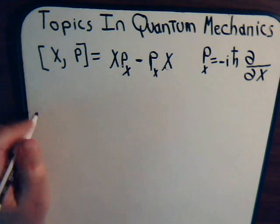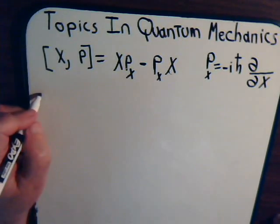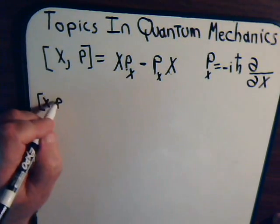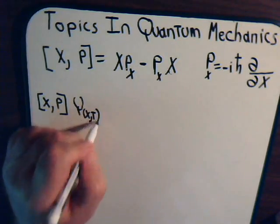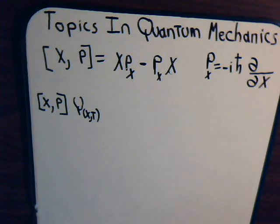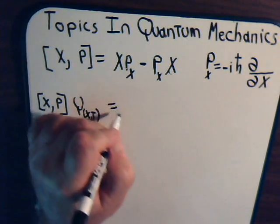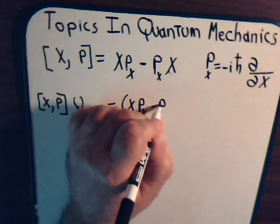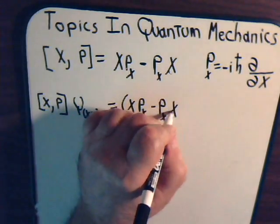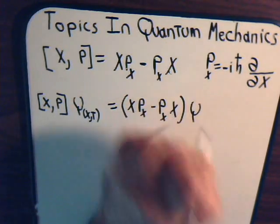Suppose that here is our commutator, [x, p], and here is some function psi, say this is a function of x, not only of x, it's also a function of say t for example. So what effect would this have, this commutator, on this function? So this would be x p_x minus p_x x psi.